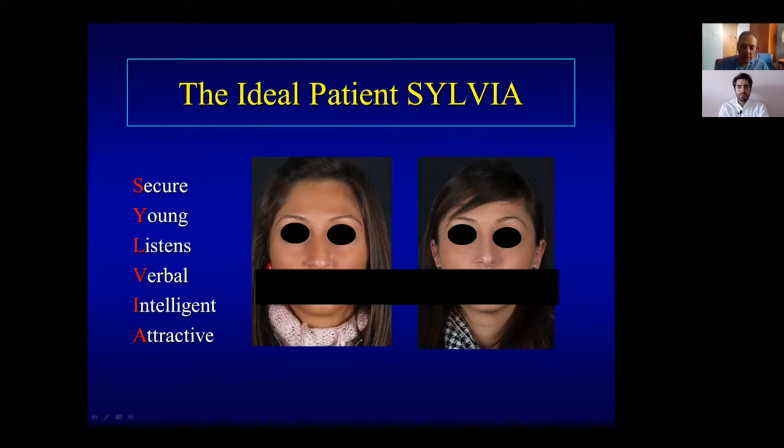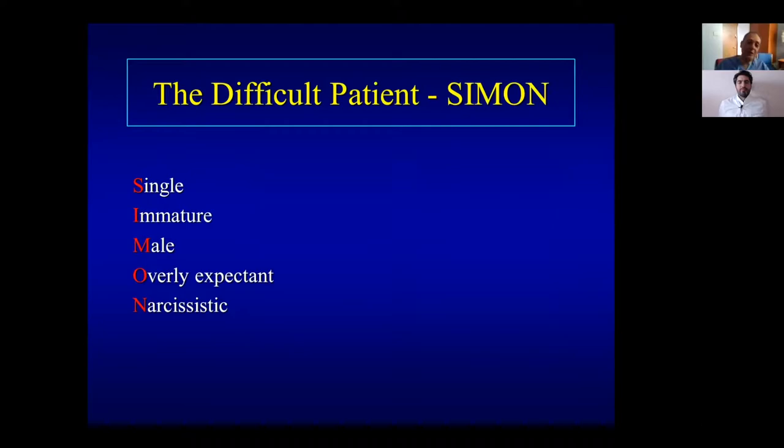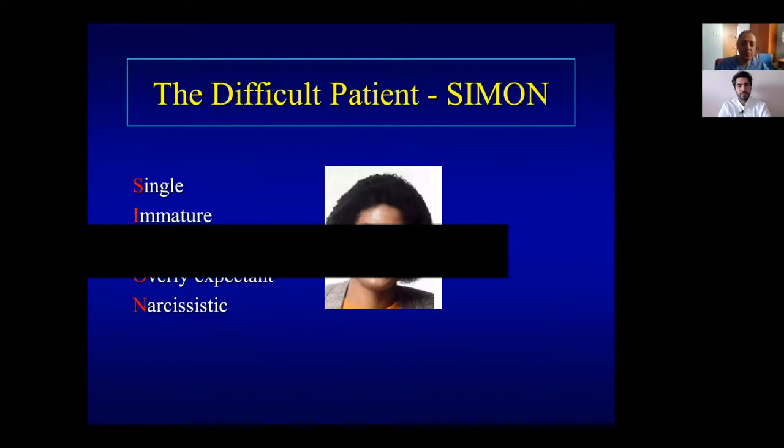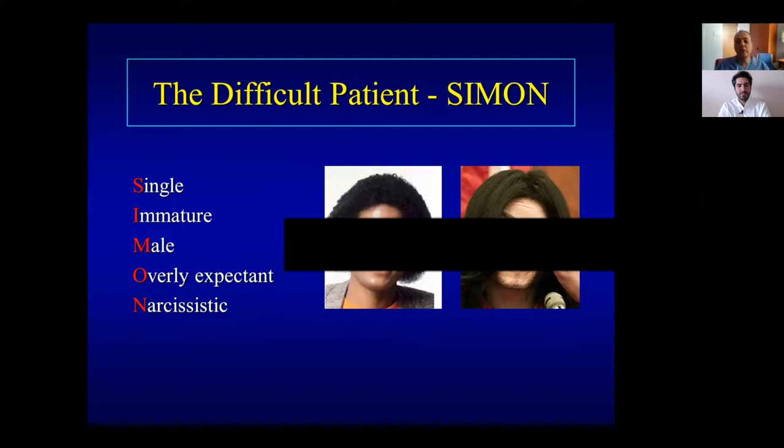The non-ideal patient is often called 'Simon' — single, immature, male, overly expecting, narcissistic. These patients are obsessed with the nose, they don't know what they want, and you can see it in the consultation. A big example is someone who keeps having operation after operation because they were never happy. They don't know what they want and the nose ends up very scarred.